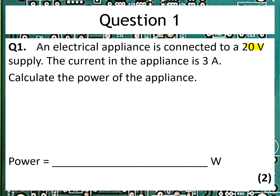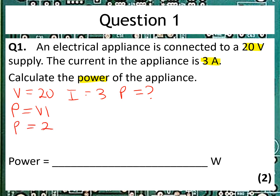So we start with what we know, which is the voltage and the current, and then what are we trying to find out? That's the power. So that tells us V is equal to 20, I is equal to 3, and we're trying to find the power. So we're looking for an equation with all those things in, that gives us P equals V times I. Then we put the numbers in underneath: 20 multiplied by 3 equals 60. So 60 is the answer, and we've already been given the units, so that's our job done.